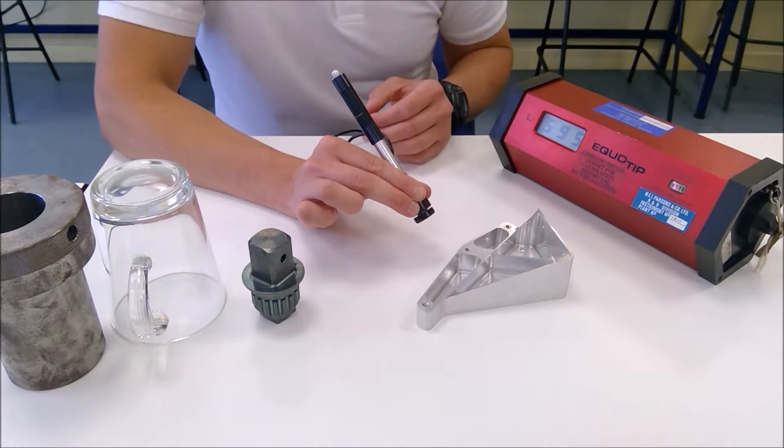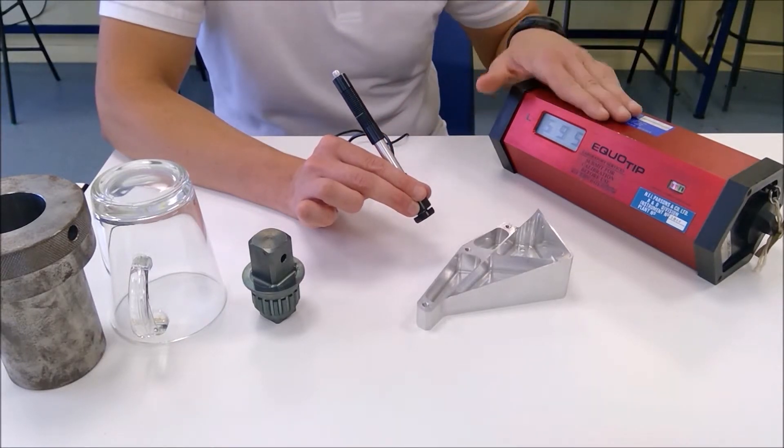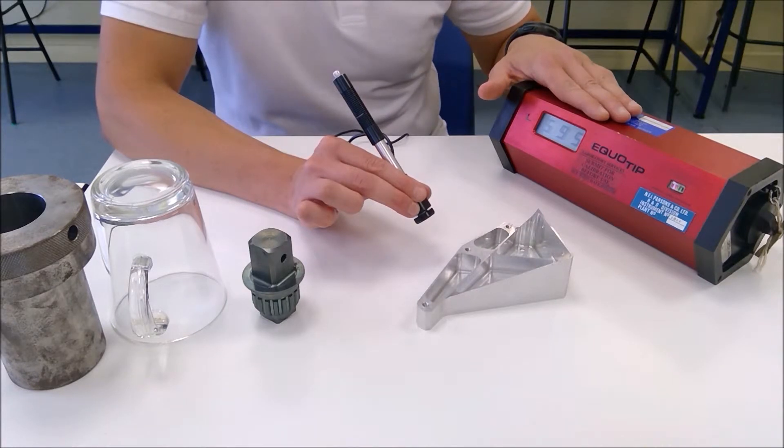And finally we'll take that average L value—remember that this is measuring L value or Lieb hardness—and we'll use that to convert to a Brinell hardness value.